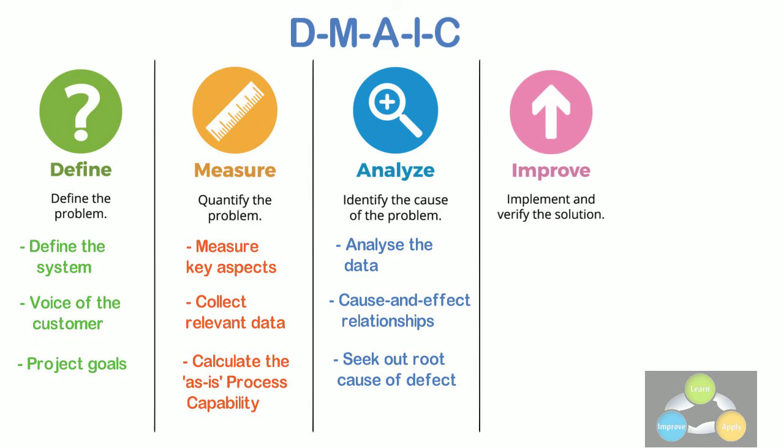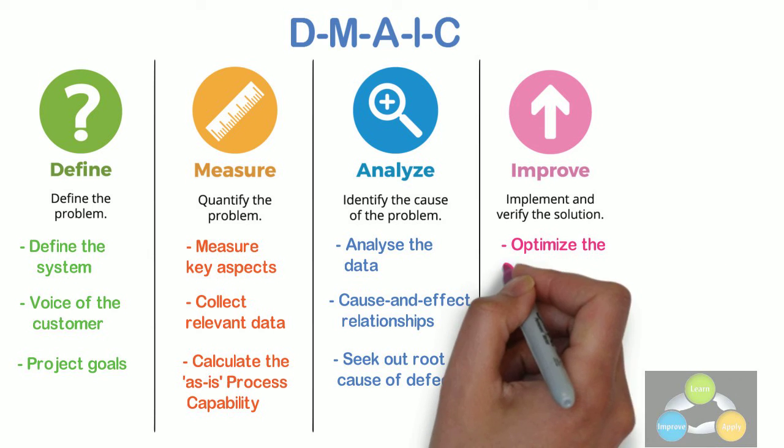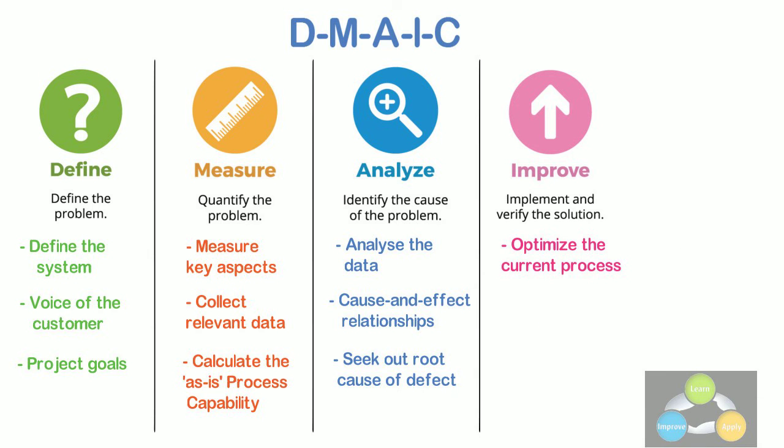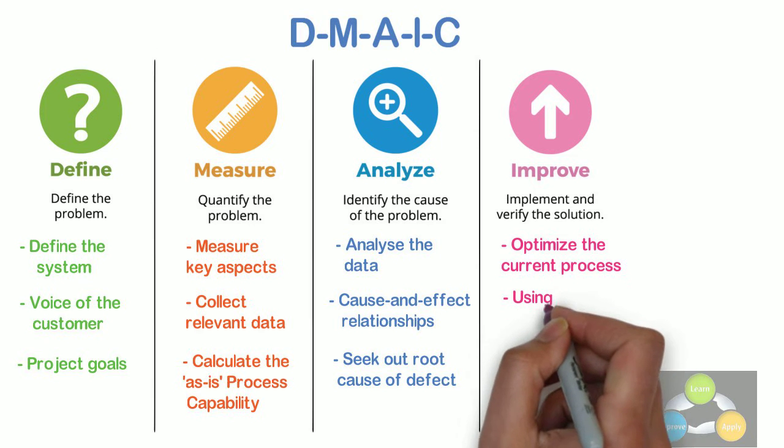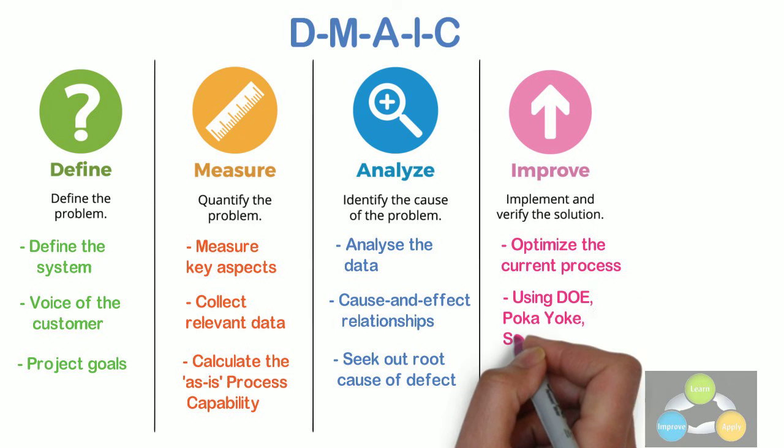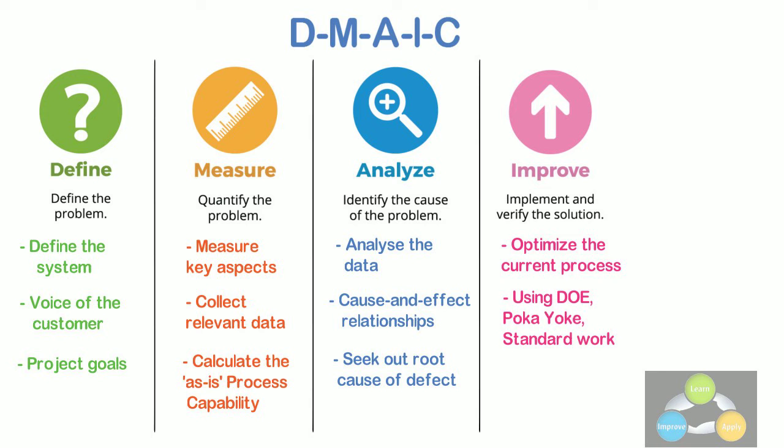Improve. This is the next important phase in DMAC. In this phase, we optimize the current process based upon data analysis, using techniques such as design of experiment, poka yoke or mistake proofing, and standard work to create a new future state process. We validate the benefits by setting up pilot runs to establish process capability.